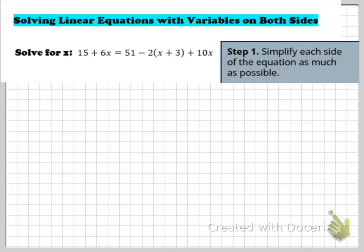We first want to simplify each side. The left side, 15 plus 6x, is already simplified — 15 is a constant, 6x is a variable term, we can't combine them, so the left side is good.